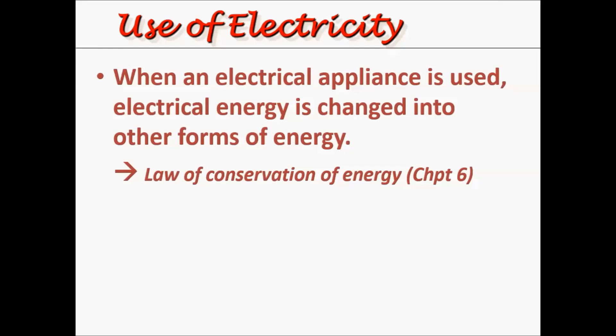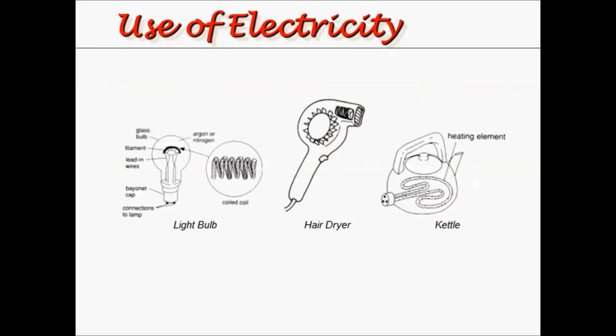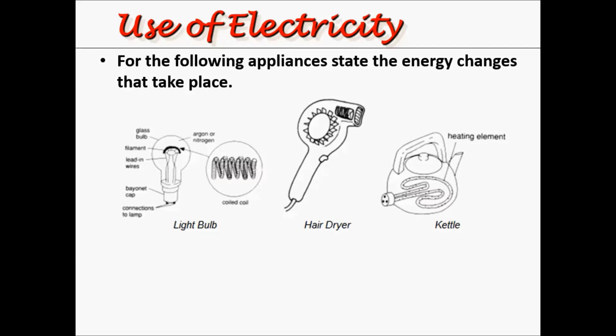When an electrical appliance is used, electrical energy is changed into other forms of energy. Recall the law of conservation of energy that you learned in chapter 6. For these appliances, energy is transformed from one form to the other. Try to state the energy changes that take place.